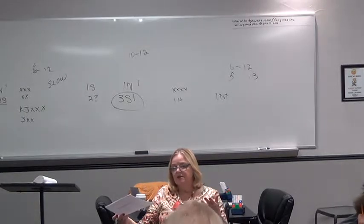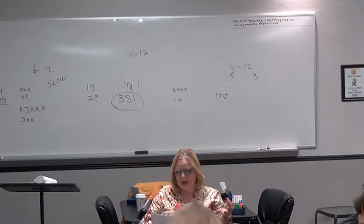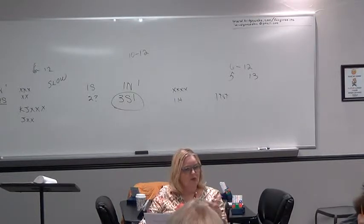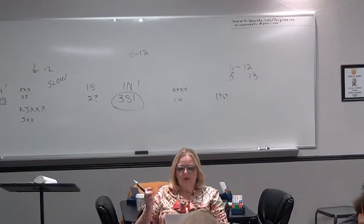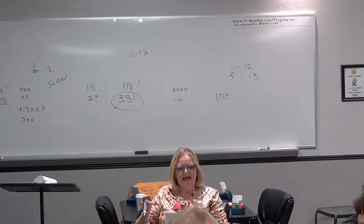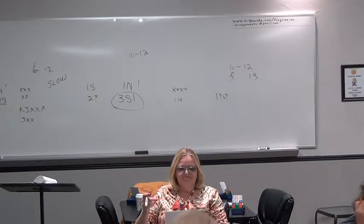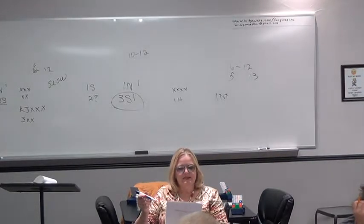And if he bids a second suit we like or our hand gets better when he bids it we give him a raise instead of passing. So we can tell partner we like his second suit better by either passing or raising. But remember with two of partner's major we do not pass him in a minor.